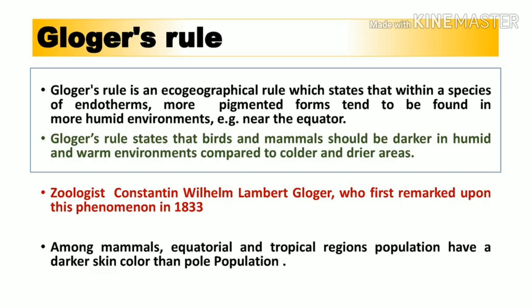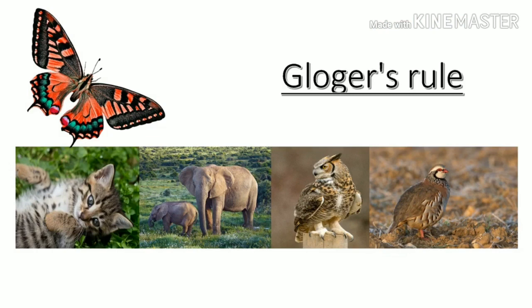This concept was given by the geologist Gloger and came into existence in 1833. Among mammals, equatorial and tropical region populations have a darker skin color than polar populations. We can easily detect this in real scenarios — individuals from polar or colder areas have less pigmented skin compared to those living in humid and warmer environments.